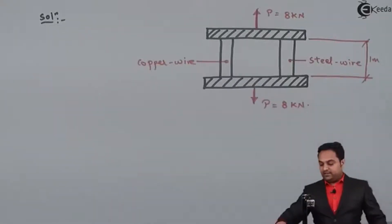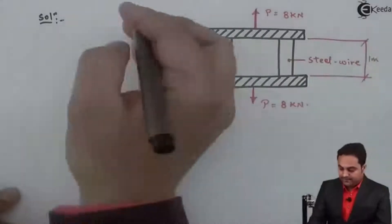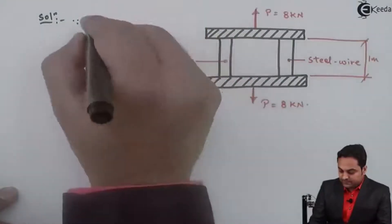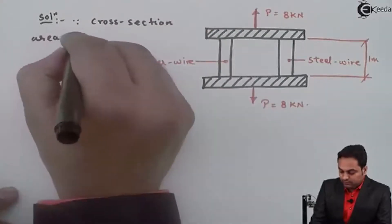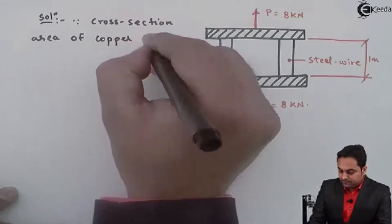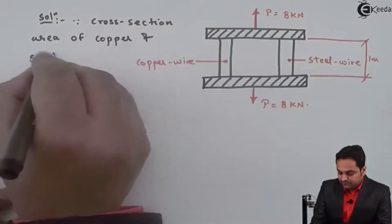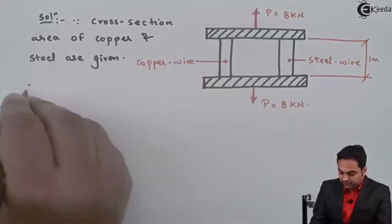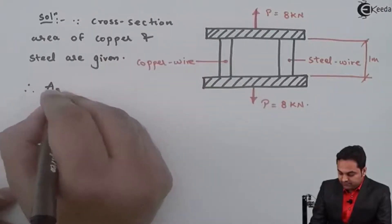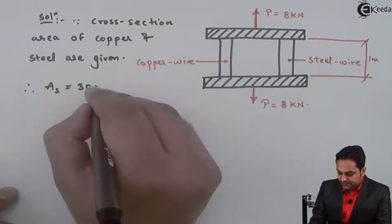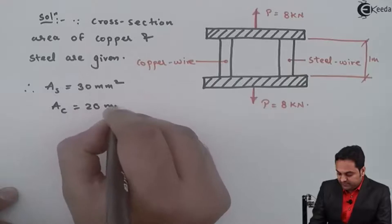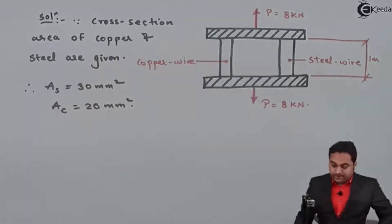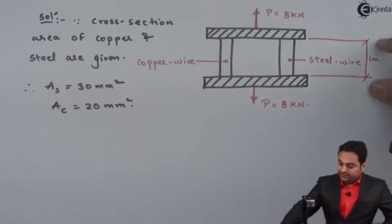Since the cross-section areas are given, the area of steel is 30 mm square and that of copper is 20 mm square.